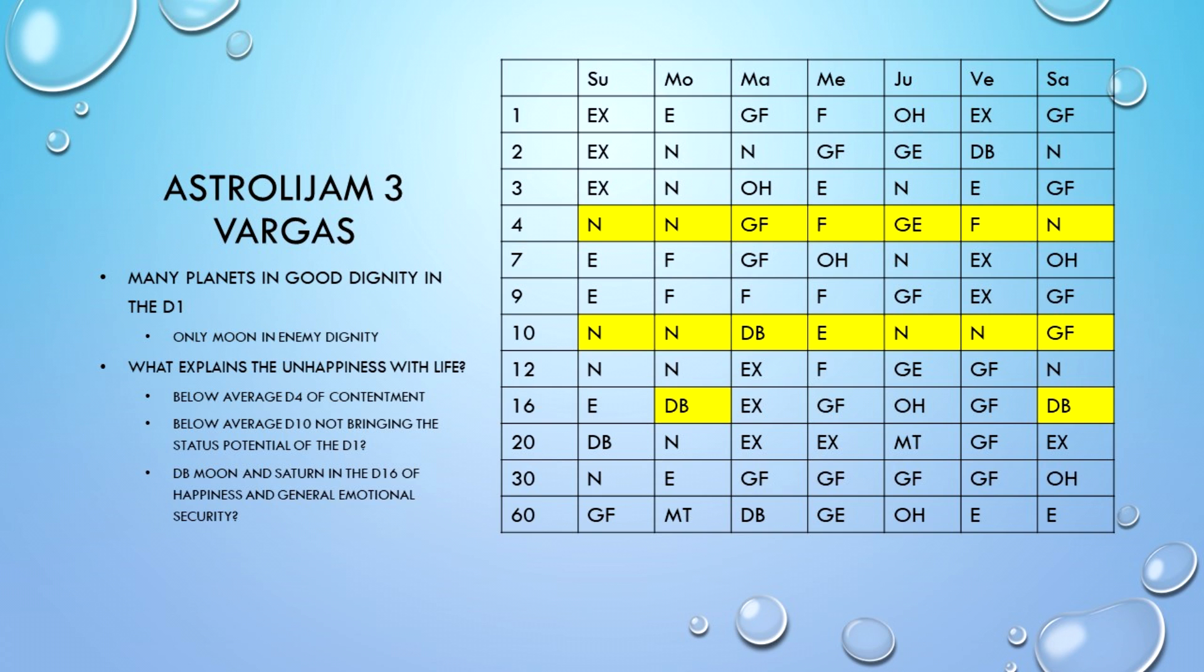We know from the birth chart that only the moon is in enemy dignity, but what about the D4 of contentment? It's a little bit below average compared to that beautiful D1. We've got neutral sun, neutral moon, neutral Saturn. We've got great enemy Jupiter and a couple of friends, great friend. We could go and have a look at the layout of the D4 and see if that's contributing.